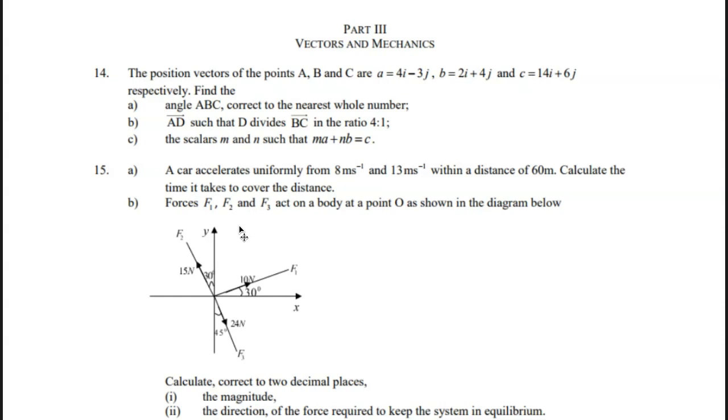Part B: Forces f1, f2, f3 act on the body at the point O as shown in the diagram below. You see the diagram. Calculate, correct to two decimal places, the magnitude and direction of the force required to keep the system in equilibrium.